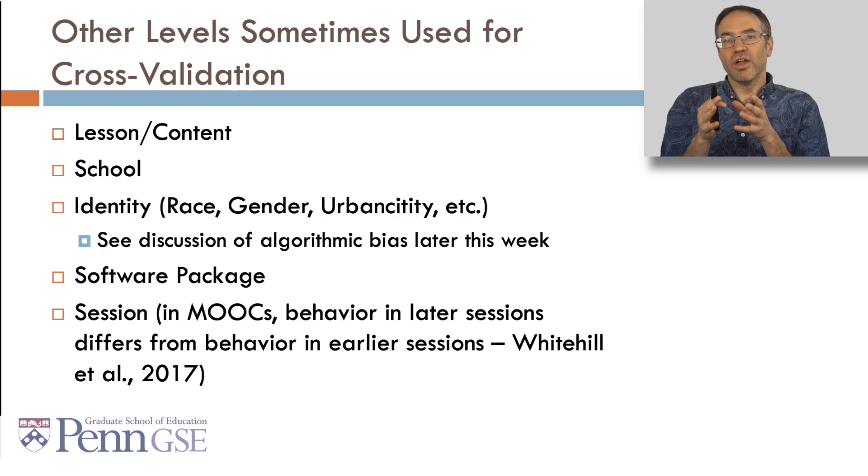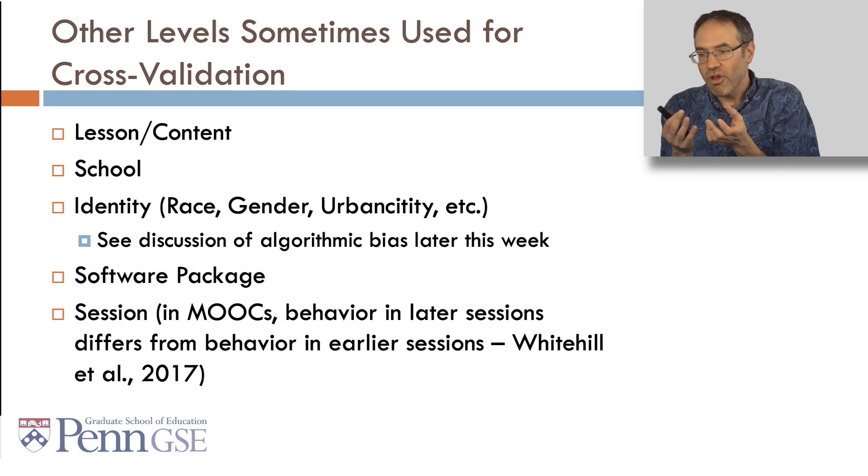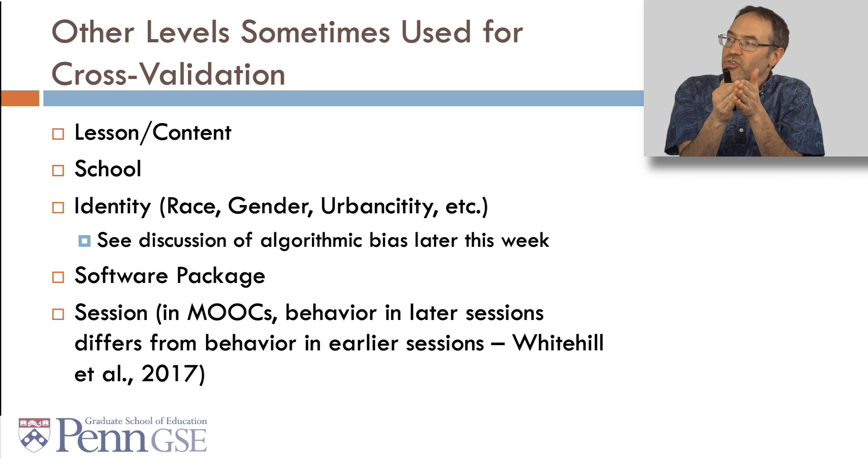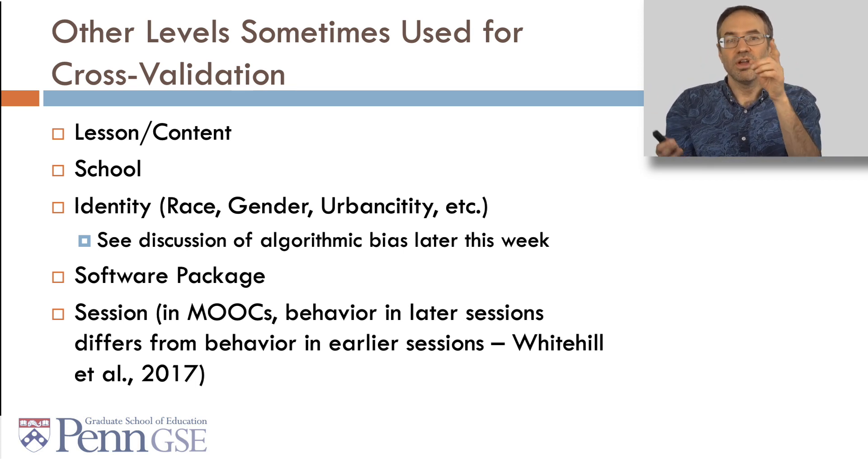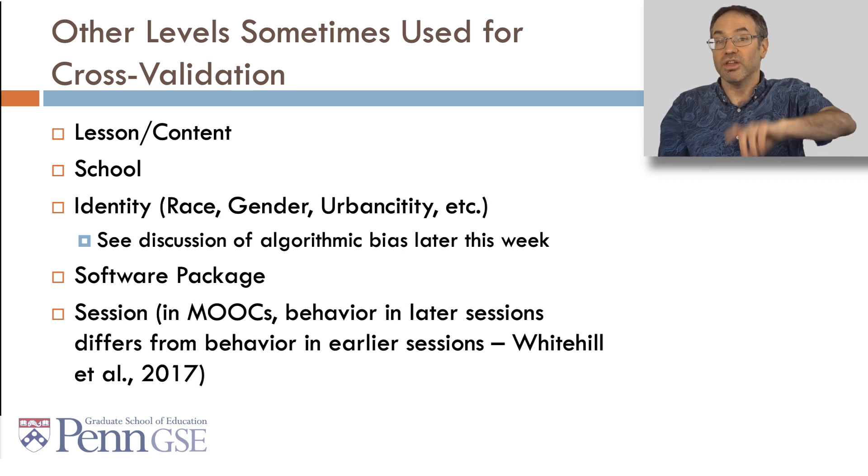Some other levels that are sometimes used for cross-validation include content or lessons. So people might try to make sure that their detectors work on new content. What school it is. People might sometimes build a model on some schools, test on other schools. Identity. People might build a model on some values of a demographic variable, like race or gender, urbanicity, and test on other ones. We'll discuss this in more detail in the class on algorithmic bias later this week.